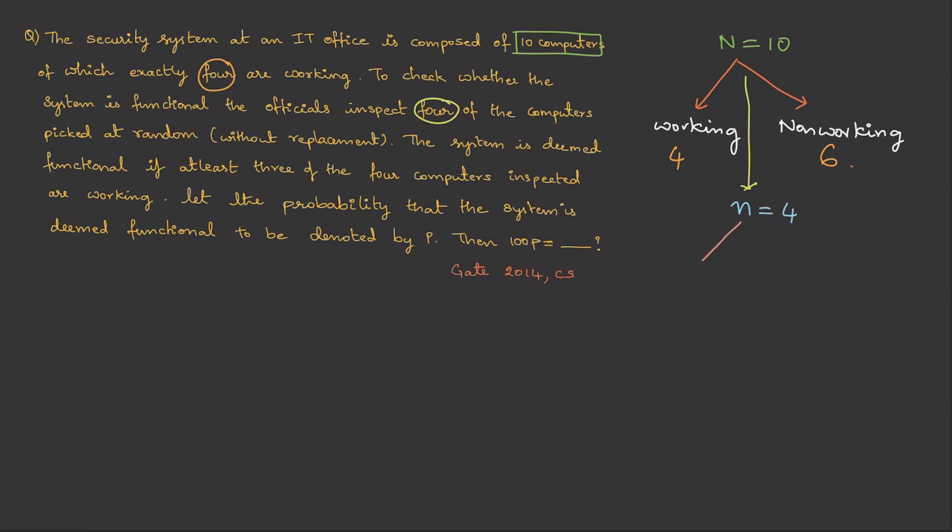Now, again, in this 4, there could be two possibilities. Few could be working, few could be non-working. They said the system to be functional, at least 3 of the 4 must be working. So, when they say at least, there could be one or more. And they said 3. Therefore, I can choose 3 to be working and 1 to be non-working, or 4 to be working and 0 non-working. We need to consider both the cases.